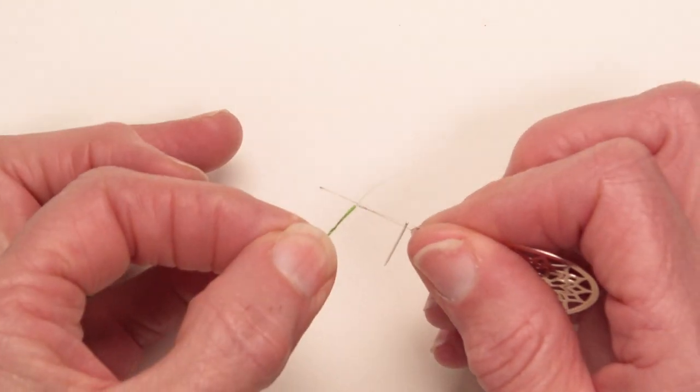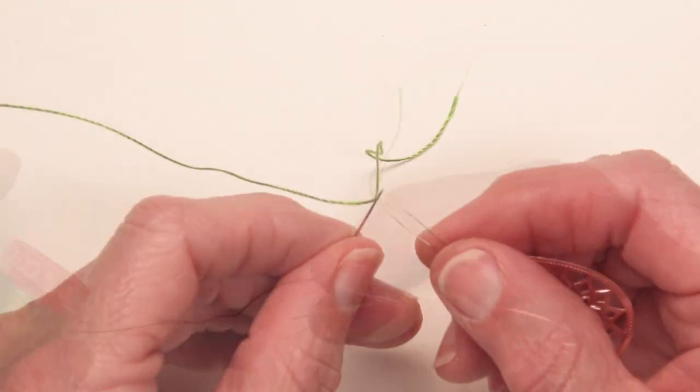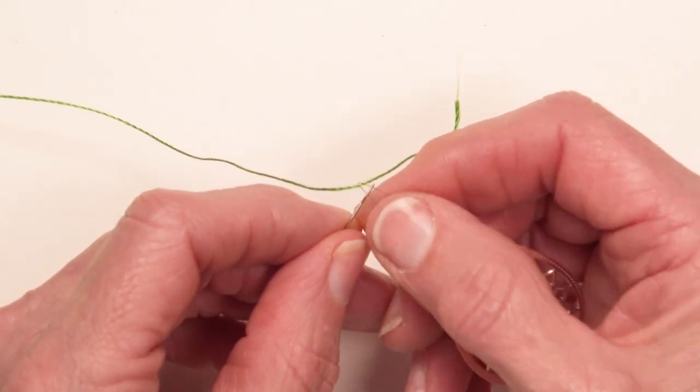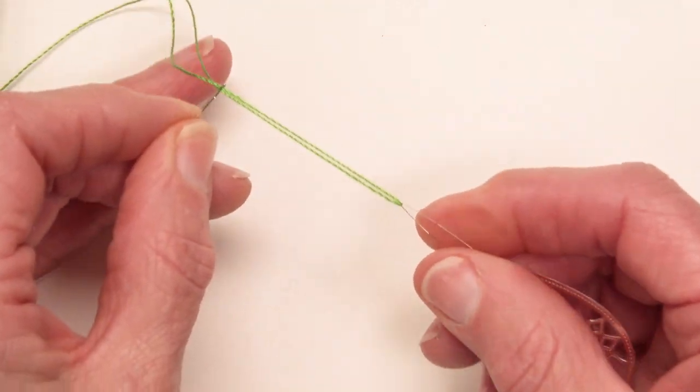But a number 12 pearl cotton, it will pull through. Hold the wire close to the thread and pull it through.